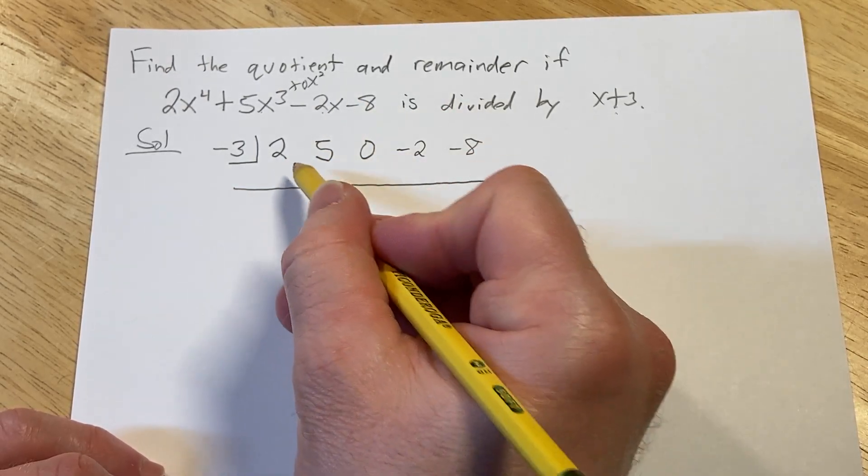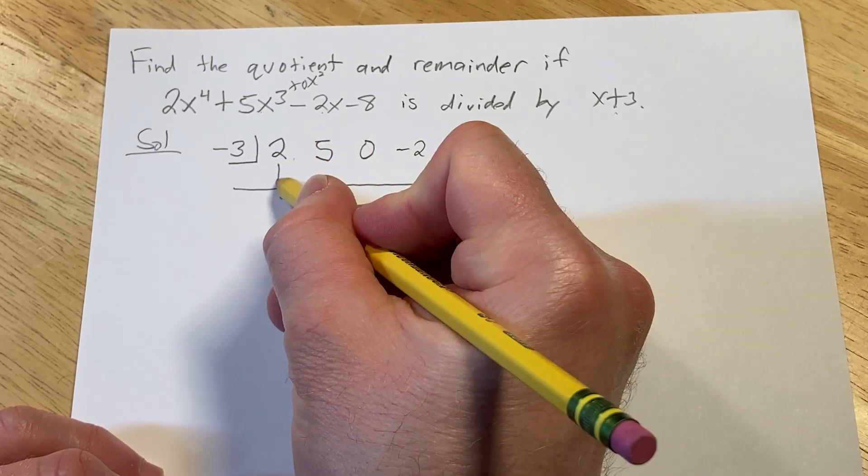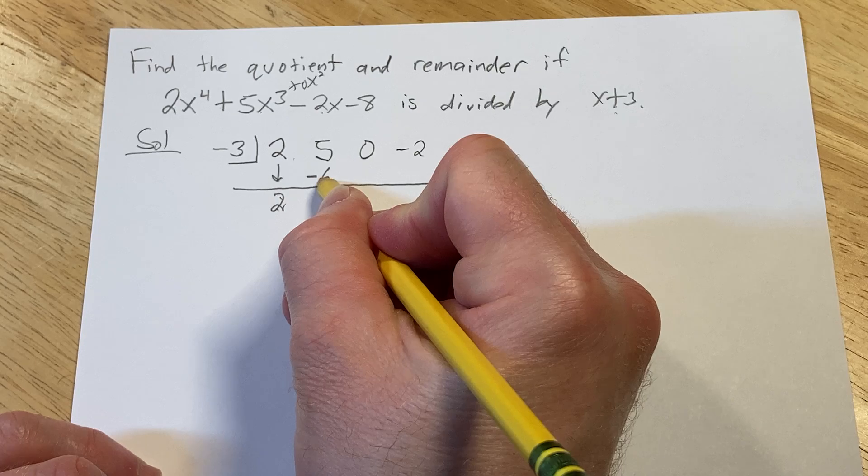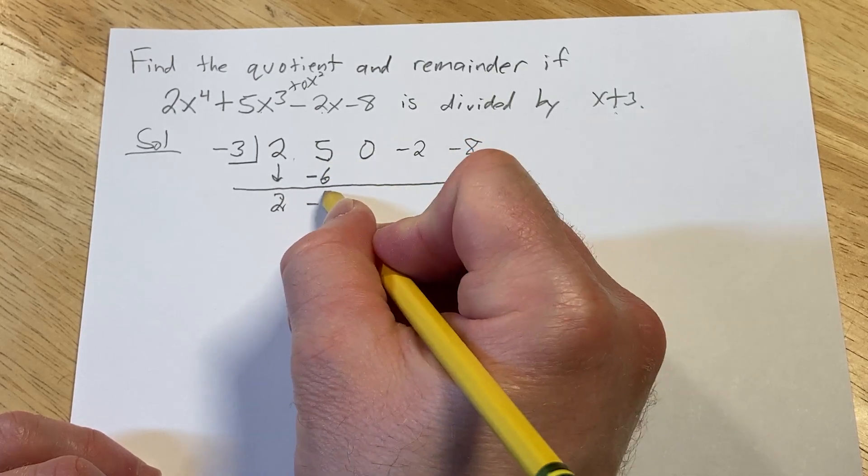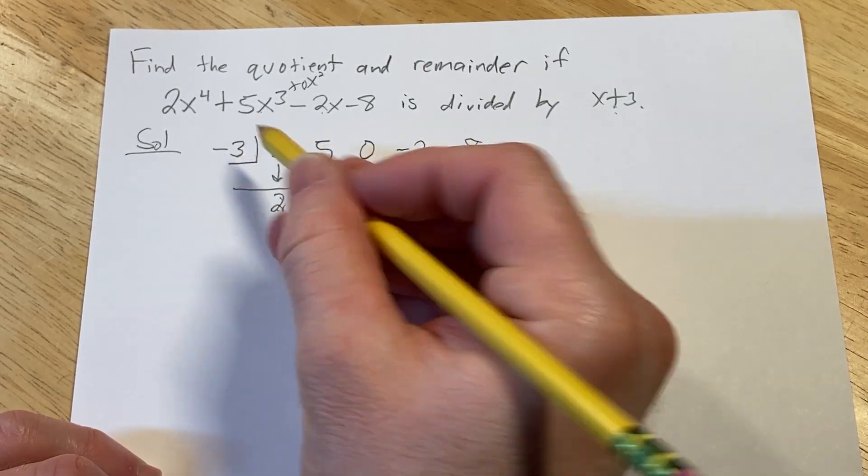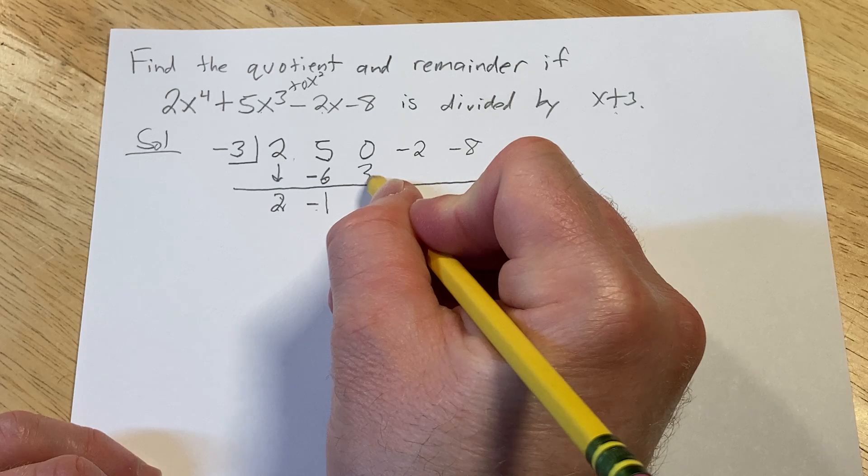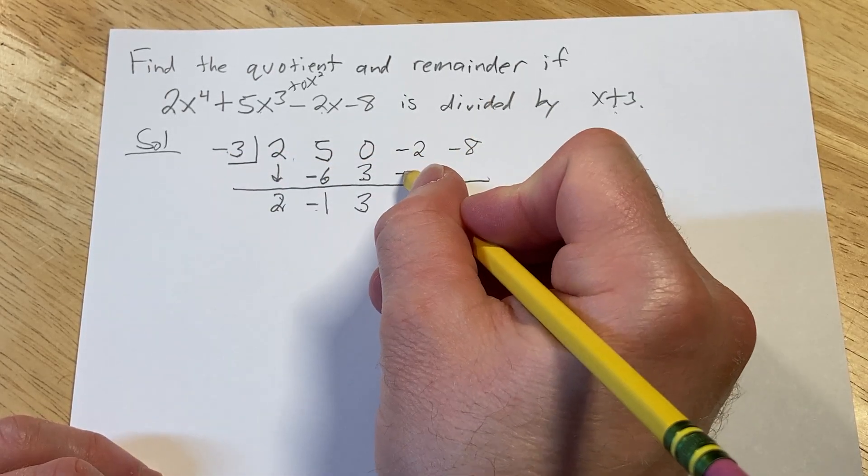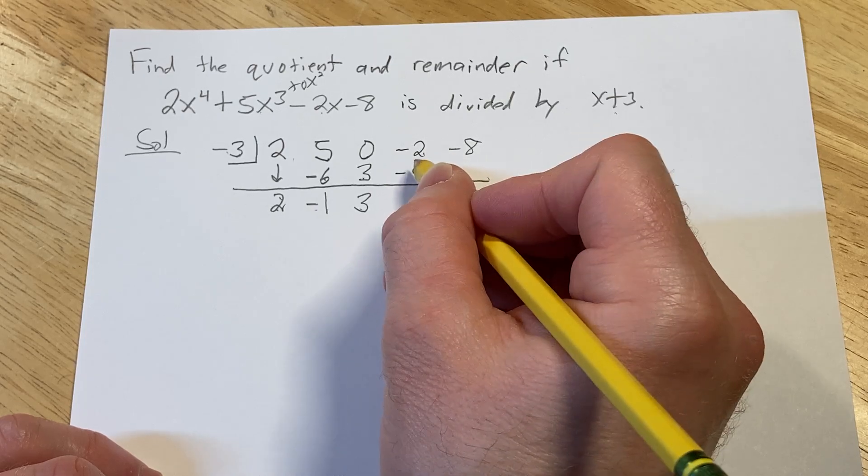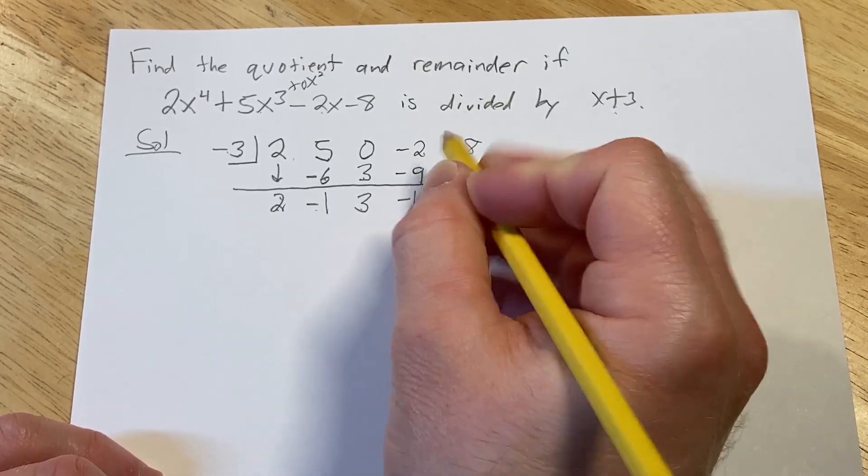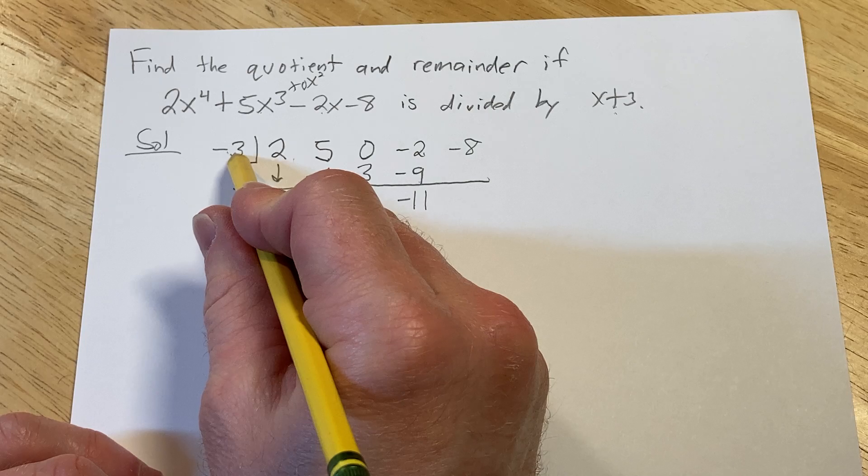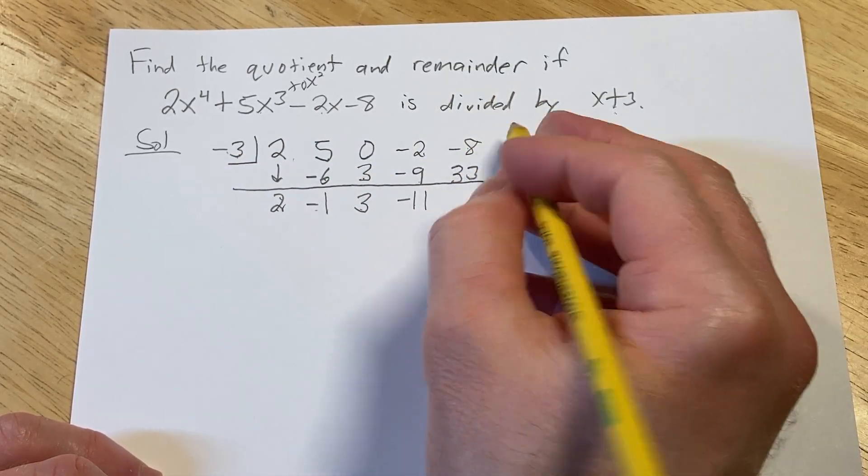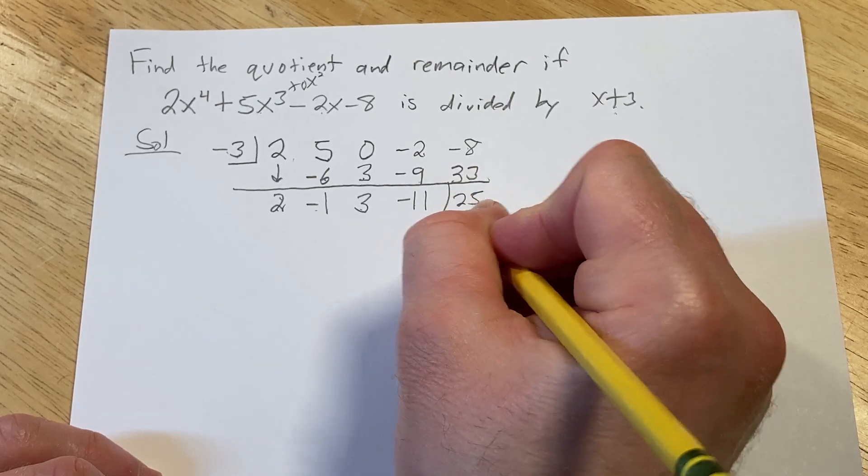The first thing you do now is you bring this number down. So 2. 2 times negative 3 is negative 6. And then you add, so you get negative 1. Negative 1 times negative 3 is positive 3. 0 plus 3 is 3. 3 times negative 3 is negative 9. Adding negative 2 and negative 9 gives us negative 11. And then negative 11 times negative 3 is a positive 33. When we add negative 8 to 33, we get a 25. And this is the remainder.